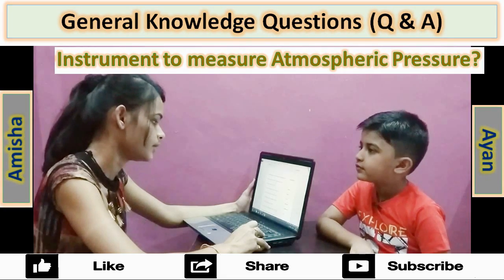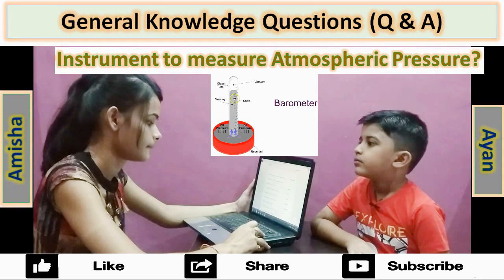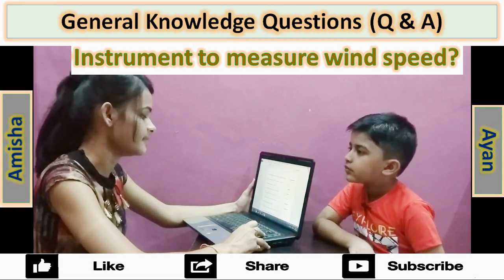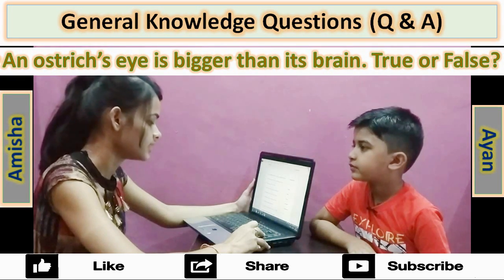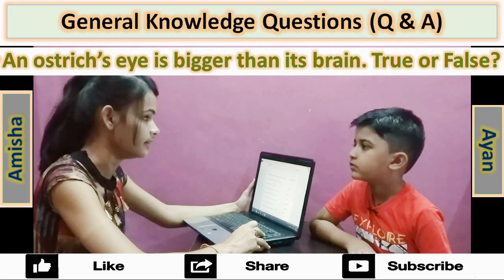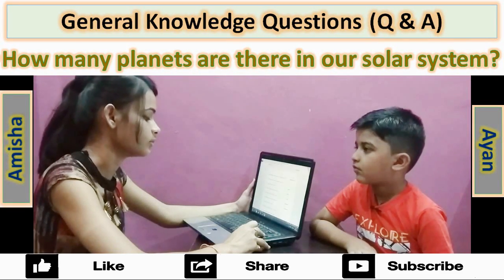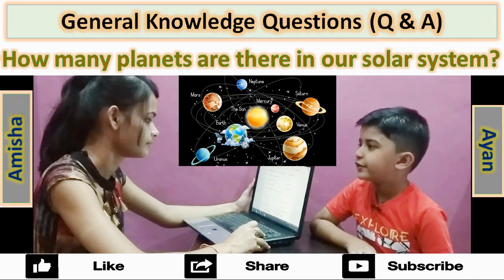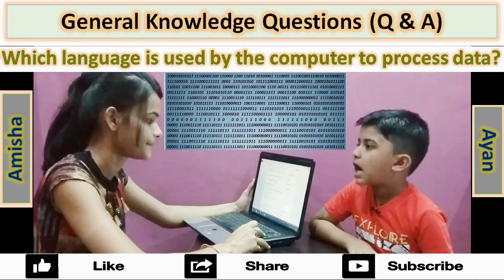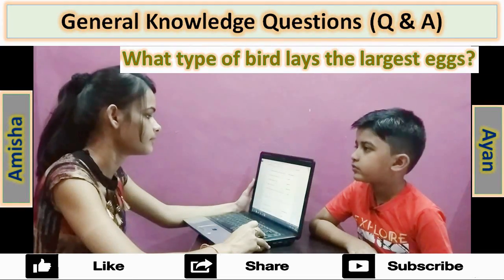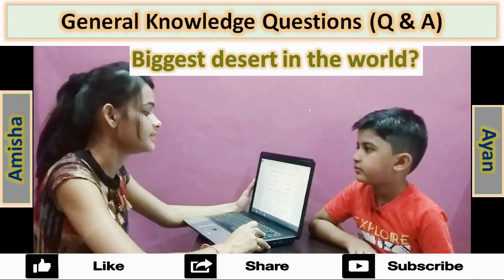What makes up 80% of our brain's volume? Water. Instrument to measure atmospheric pressure? Barometer. Instrument to measure wind speed? Anemometer. An ostrich's eye is bigger than its brain — true or false? True. How many planets are there in our solar system? 8. Which language is used by the computer to process data? Binary language. What type of bird lays the largest eggs? Ostrich. Biggest desert in the world? Sahara Desert.